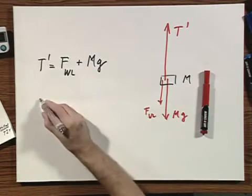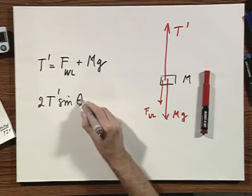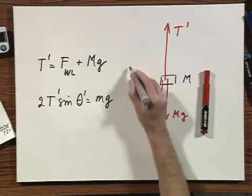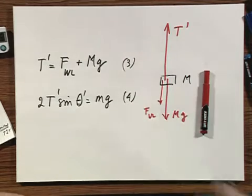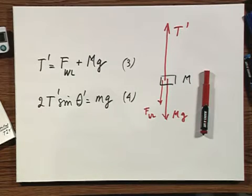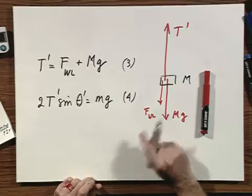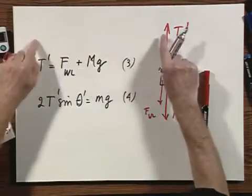For the other object, for little m, I would get that 2T prime, because the tension is the same everywhere, times the sine of theta prime, theta has changed, equals mg. So this is equation number three, and this is equation number four. And as I pull capital M down, it should be obvious that little m goes up. If I pull this one down, little m will go up, and the angle thetas will become smaller.